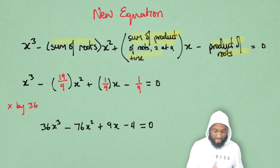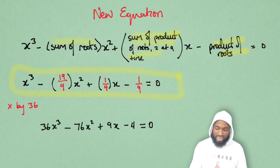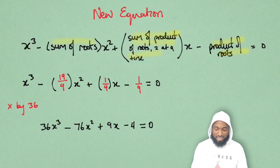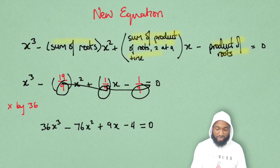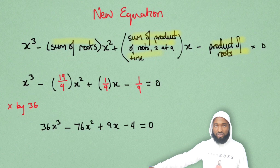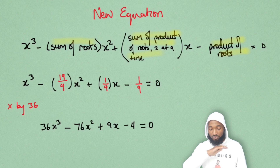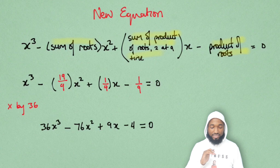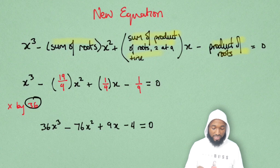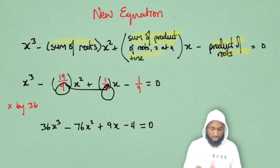And this is the answer — well, this is not really the answer because they wanted integers for the coefficients. We know from our earlier maths that if we have 9, 4 as denominators, we need to multiply by the LCM of all the denominators in the fractions. So we're going to multiply by 36, which is the LCM of 9 and 4.